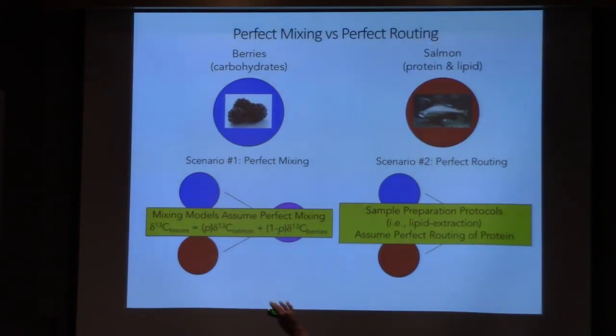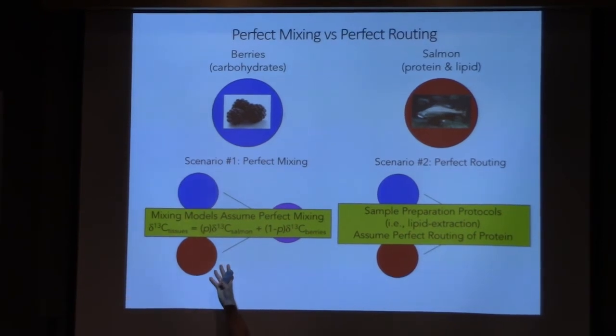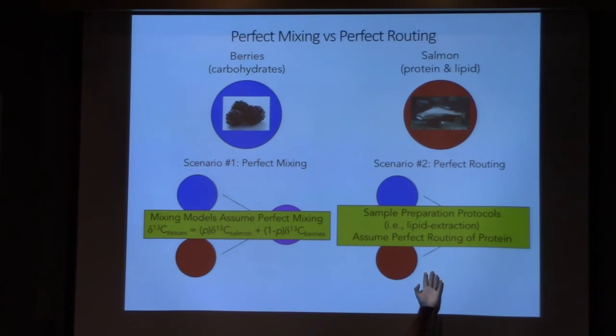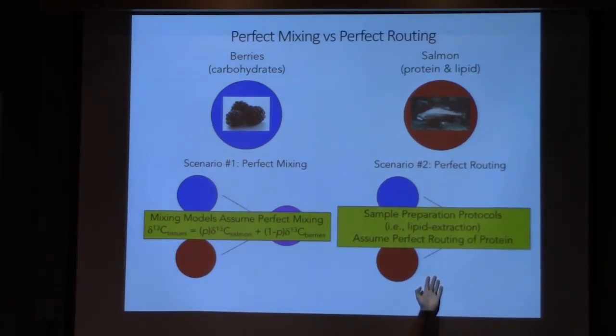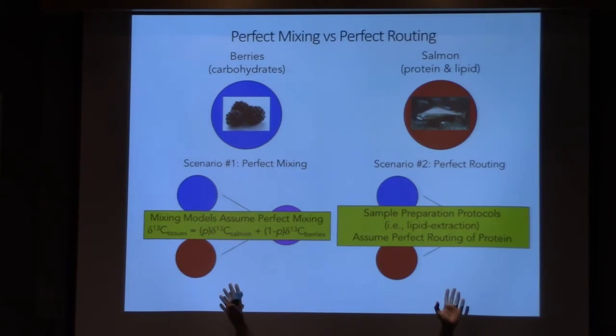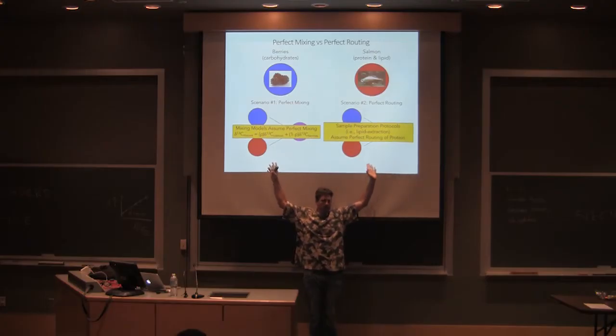The problem is that when you do a mixing model, there's an analytical problem here. Sample preparation protocols, on the other hand, that you were talking about Jeremy, you assume this. Because what do you do the first thing when you get your prey sources? You lipid extract them. You basically remove everything that's not protein. And you're comparing the protein in the food to the protein in the animal, which assumes 100% routing.